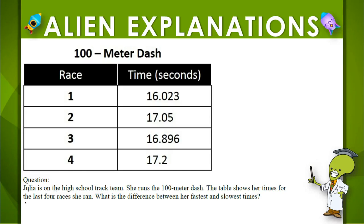In this problem we know that Julia is on a track team and this table shows how fast she ran the hundred meter dash on four different races. The question is: what is the difference between her fastest and slowest times? So let's look at the table and figure out which one is the fastest and which one is the slowest.